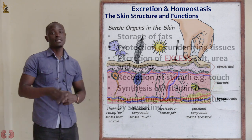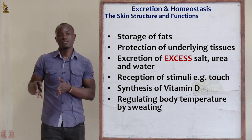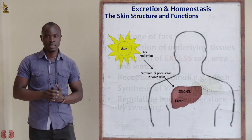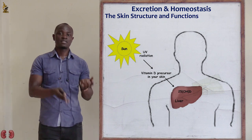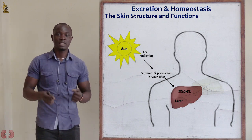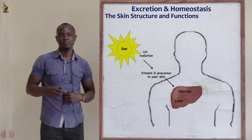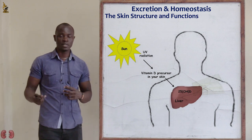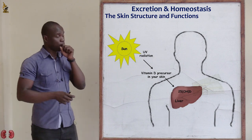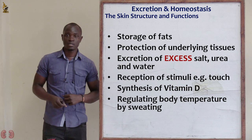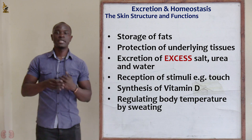The skin also serves as a medium for synthesis of vitamin D. When you go outside on a sunny day and bask in the sun, the skin receives and processes the sunlight to synthesize vitamin D, which helps in the strong formation of bones and other structures in the body. Those are among the functions of the skin — there are other functions not listed here, so these six are among others.